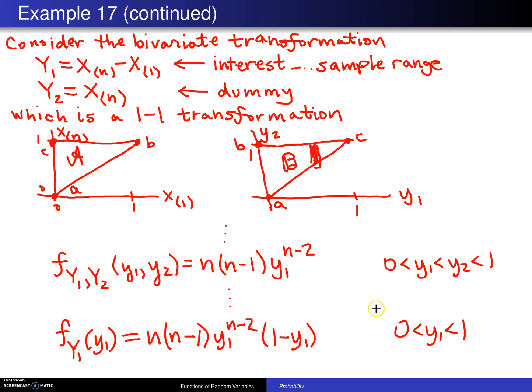So at long last, we now have the probability density function of the sample range. And this won't surprise you. That sample range pushes towards 1 as n increases, because x_(1), of course, will trend towards 0 for large sample sizes. And x_(n) will trend towards 1 for large sample sizes. And 1 minus 0 is 1, which means this distribution pushes its density towards 1 as n increases. This ends the very long section on the transformation technique.